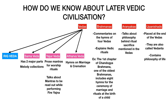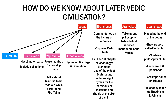Upanishads are 108 in number and do not stress on rituals. The philosophy of Upanishads was also taken into Buddhism and Jainism. One important thing is that the Bhagavad Gita is also a part of Vedanta.